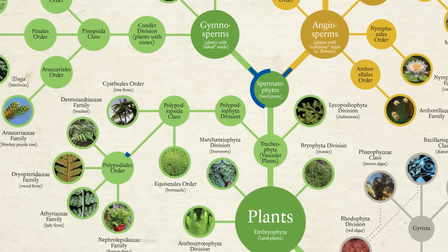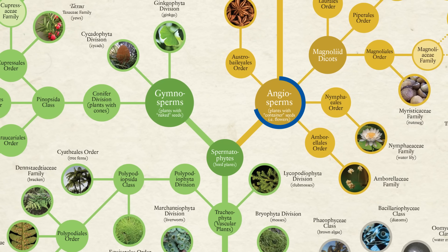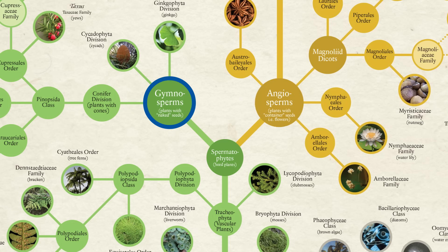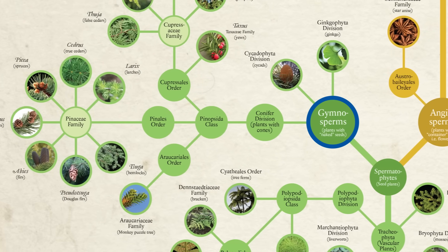From here, things go in two very different directions. Angiosperms grow seeds in containers called fruit, and produce flowers prior to growing these fruits. In contrast, gymnosperms do not grow seeds in containers and are hence considered to be naked seeds — so no flowers and no fruit. Although, as we'll see, sometimes their seeds do kind of look like fruits.